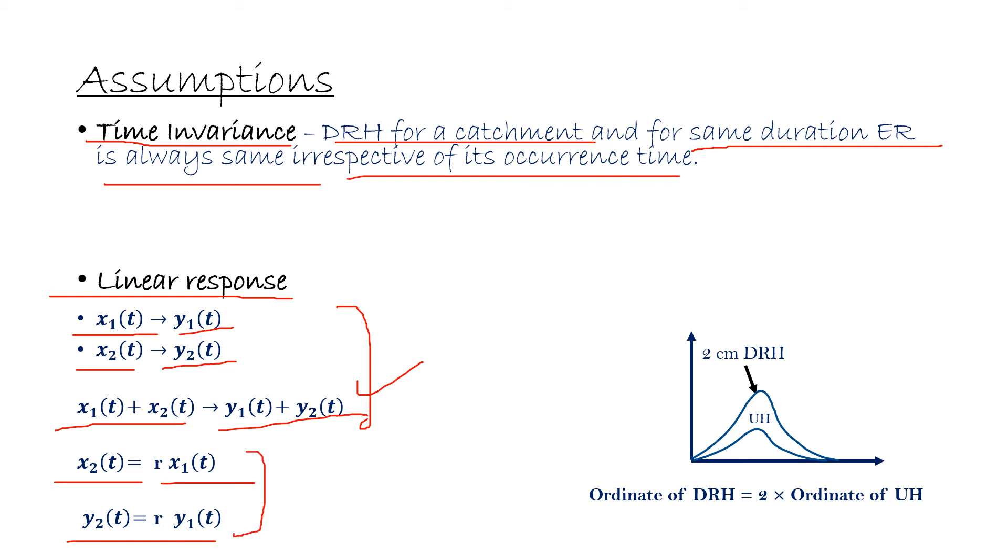Let's see this with the help of an example. So here we have given a unit hydrograph and we have to plot direct runoff hydrograph due to 2 centimeter of rainfall excess. So here rainfall excess is 2 centimeter, that is twice of rainfall excess of unit hydrograph that is one centimeter, one unit. So what will happen? Ordinate of DRH will be just twice of ordinate of unit hydrograph, and in this way this DRH will be plotted.